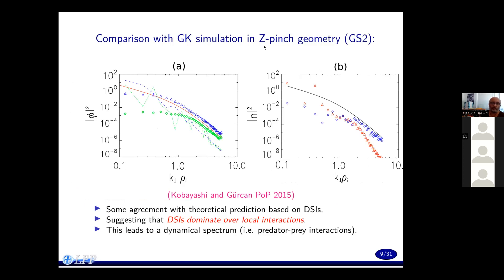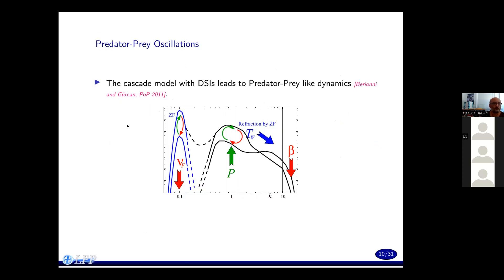We can do comparisons with gyrokinetic simulations in z-pinch geometry using GS2. This was done by Sumire Kobayashi, and you can see the comparison with the n-squared spectrum — the non-adiabatic part of the density — with the theoretical prediction based on disparate-scale interactions with some gyrokinetic code. This suggests that disparate-scale interactions dominate over local interactions in this case, and it actually leads to a dynamical spectrum, which we also see in these simulations.